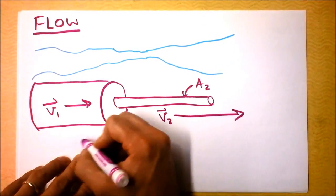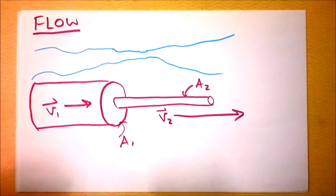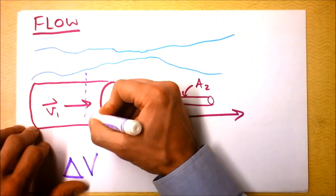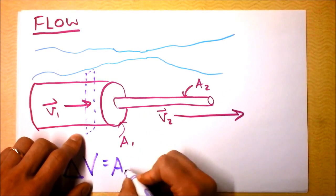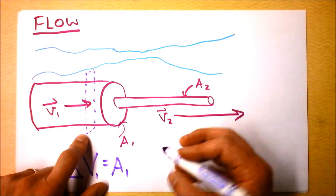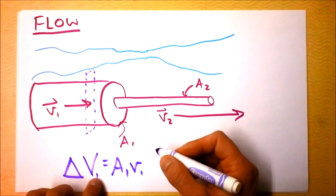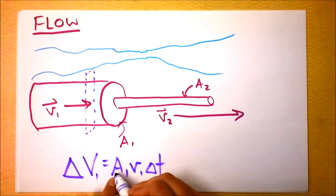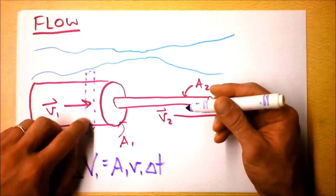We can label these as area 2 and area 1, and we see there's some kind of relationship between them. We need to write a statement for how much volume is going through a certain slice. Delta V1 equals area 1 times the speed in this region times the time — because the units work out: distance squared times distance divided by time times time gives volume. So this is actually the volume of fluid that's gone through that section.